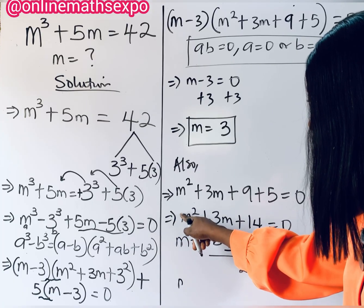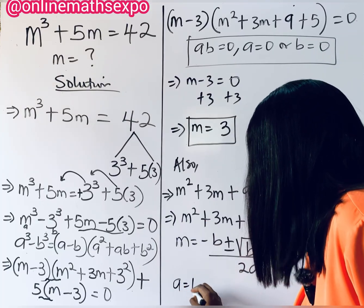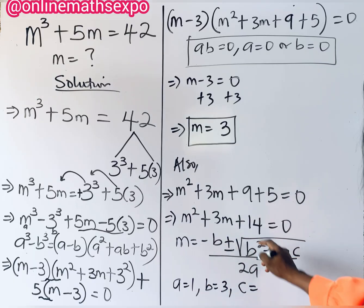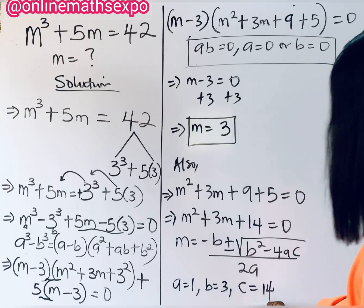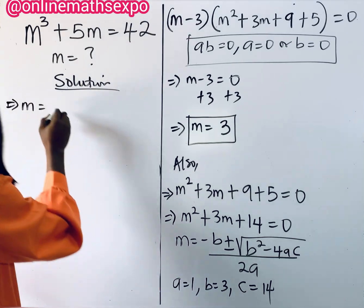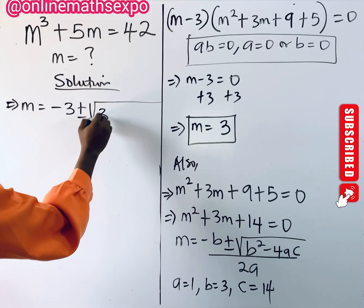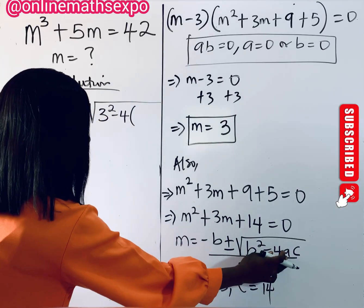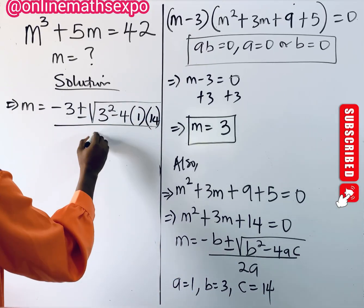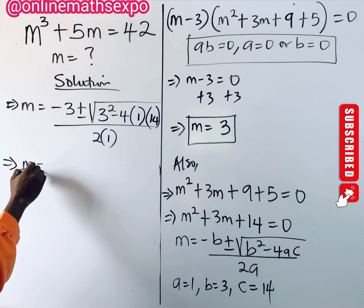Identifying the coefficients: a is the coefficient of m², which is 1 (the invisible coefficient). b is the coefficient of m, which is 3. c is the constant, which is 14. Plugging these values into the formula: m equals negative 3 plus or minus square root of 3² minus 4 times 1 times 14, all divided by 2 times 1.